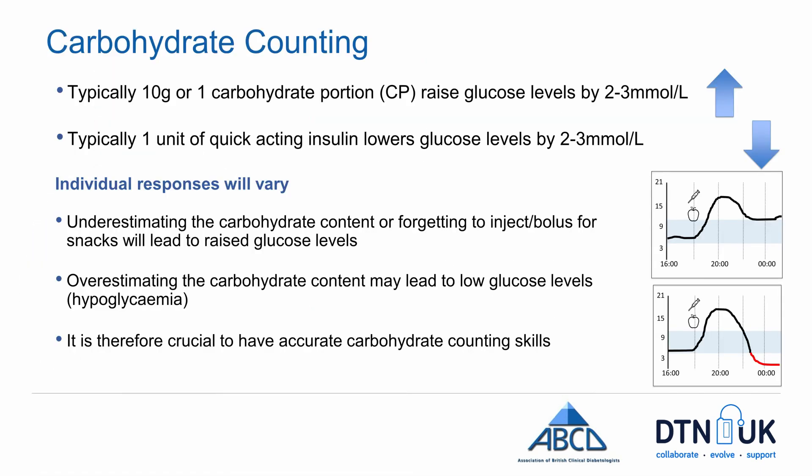Typically, 10 grams of carbohydrate or one carbohydrate portion raises glucose by 2–3 mmol/L, and one unit of quick-acting insulin will lower glucose by 2–3 mmol/L. However, individual responses vary, so it's important to work out how the carbohydrate you eat and the insulin you take works for you. Underestimating carbohydrates or forgetting to bolus for a snack will lead to raised glucose levels, whereas overestimating carbohydrate content will lead to lower glucose levels and may result in hypoglycemia.